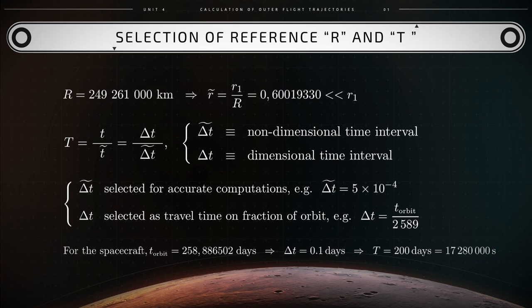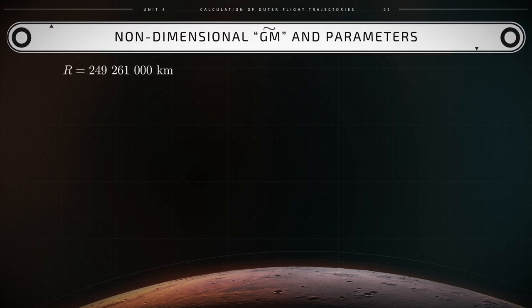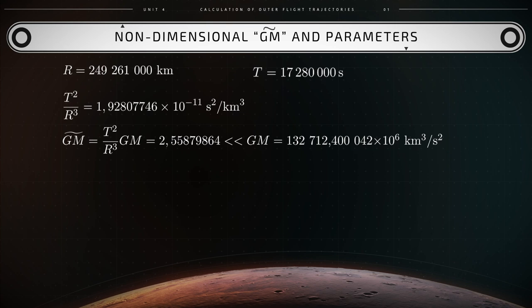Now, with capital R that equals 249,261,000 kilometers, and capital T that equals 17,280,000 seconds, the expression for the non-dimensional GM tilde that yields capital T squared over R cubed times a dimensional GM, will result in the following number, 2.55879. This number is significantly smaller than the dimensional GM of the Sun, which equals 132,712,440,042 kilometers cubed per second squared.